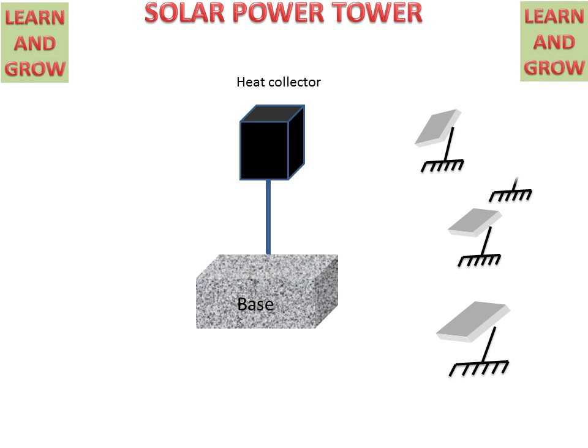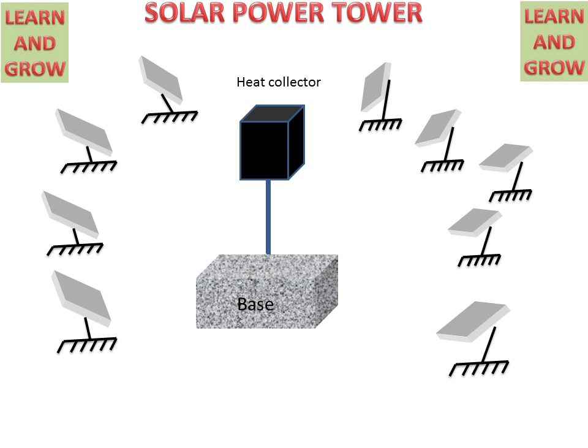First, we will discuss the parts of a solar power tower. We have a base with a heat collector and thousands of mirrors or heliostats for concentrating sun radiation to the heat collector.